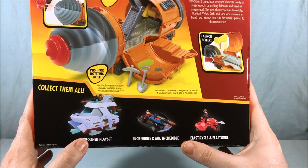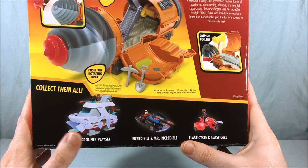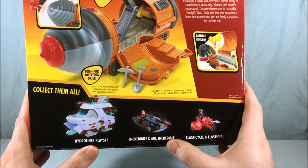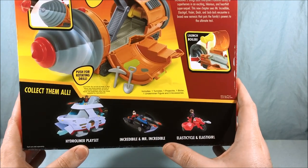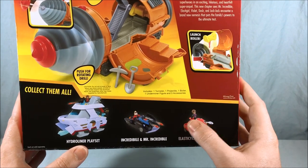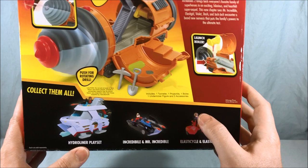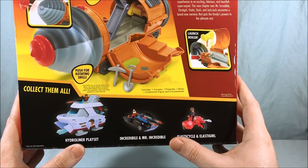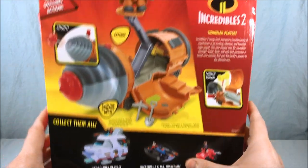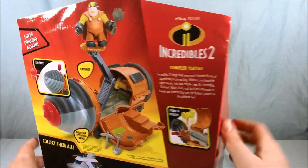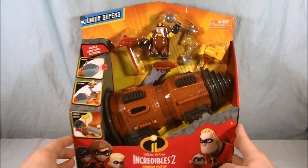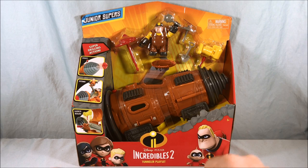You can see here on the bottom this is the Hydroliner playset, a large boat. I do have that. We've already taken a look at Mr. Incredible and the Incredibile. I decided to pass on the Elasticycle and Elastigirl just because I think she looks weird the way they have her sit on the bike. Let's go ahead and get this out of the packaging so we can take a closer look.